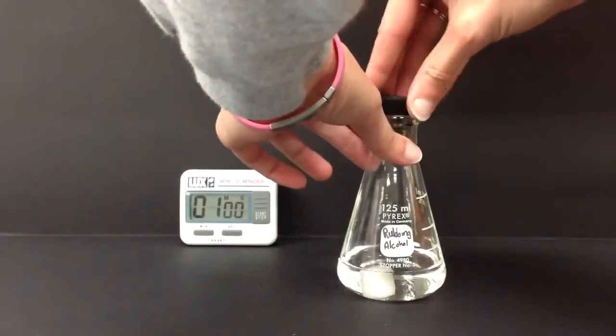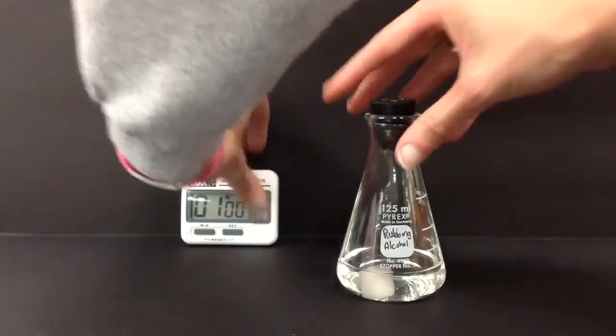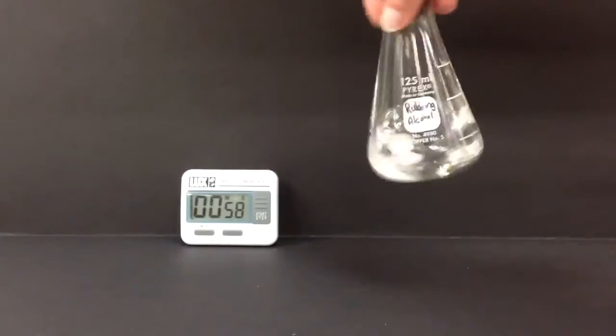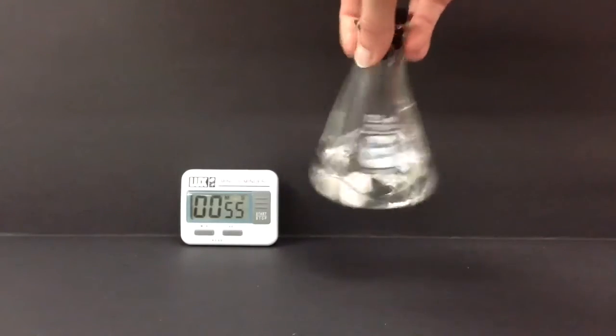The next solvent is isopropyl alcohol, otherwise known as rubbing alcohol. Again, we're using just one sugar cube and 50 milliliters of the liquid. Observe for miscibility and other changes.